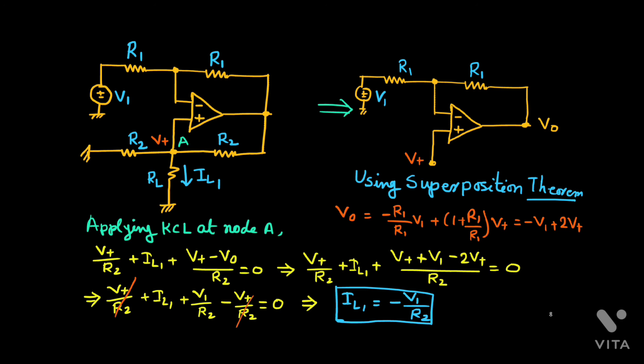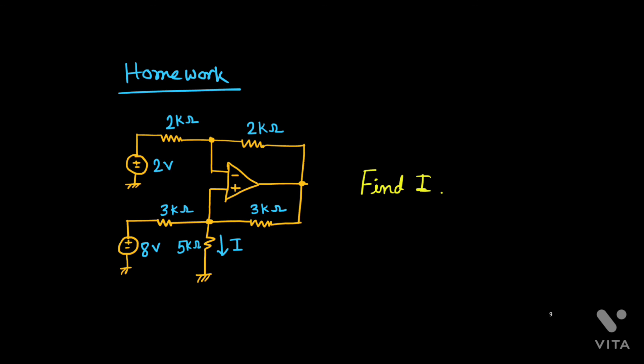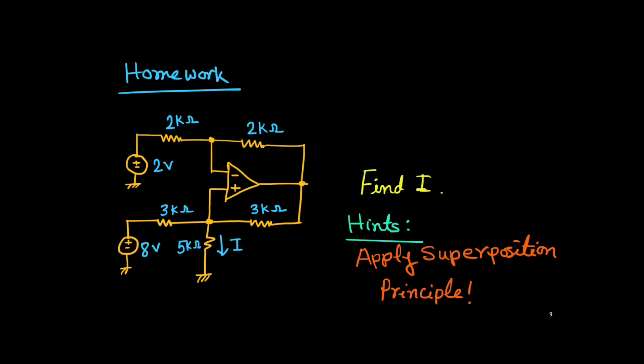Now I will give you the original problem as a homework problem, because everything is already discussed — you just have to put in the values. Both sources are connected: one to the inverting terminal and the other to the non-inverting terminal. You can guess the current I will be independent of load resistance. As a hint, you can use the superposition principle: one source acts at a time, find I1, then find I2, and combine them to get the overall current.